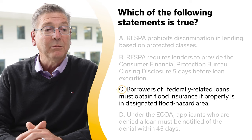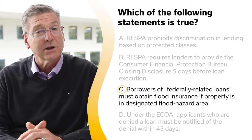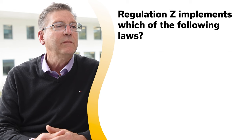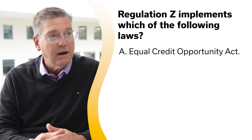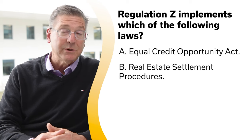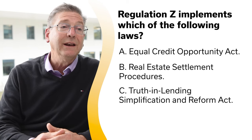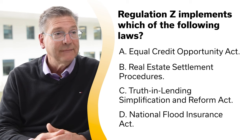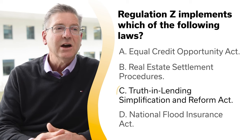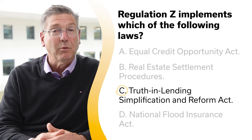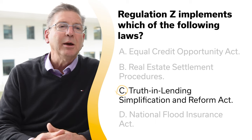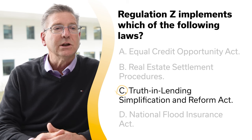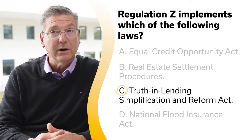Regulation Z implements which of the following laws? A, Equal Credit Opportunity Act; B, Real Estate Settlement Procedures; C, Truth in Lending Simplification and Reform Act; or D, National Flood Insurance Act. The correct answer is C, Truth in Lending Simplification and Reform Act. Regulation Z implements the Truth in Lending Simplification and Reform Act and the Consumer Credit Protection Act, and requires lenders to disclose finance charges and APR prior to closing.